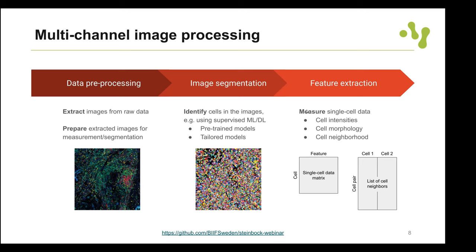We did the pre-processing — extracted TIFF images from raw data with hot pixel filtering. The next step is segmentation. This is probably where most time savings are achieved when using Steinbock, because if you use a pre-trained neural network such as the Mesmer neural network by Greenwald et al., this is really just one command: 'steinbock segment deepcell'.